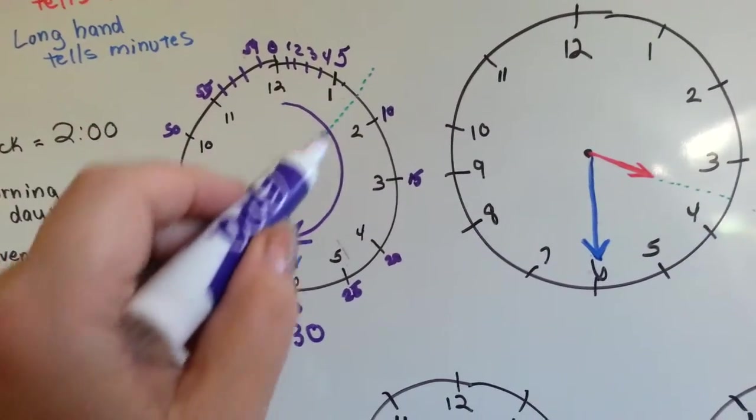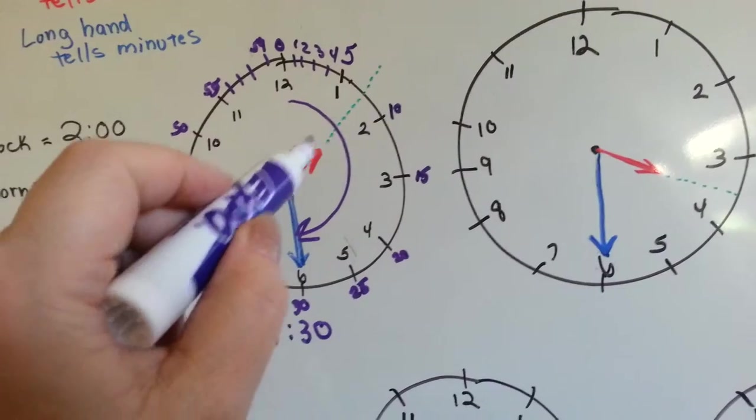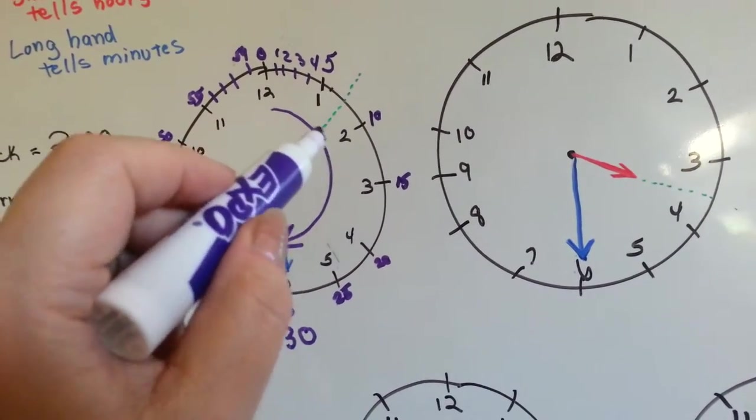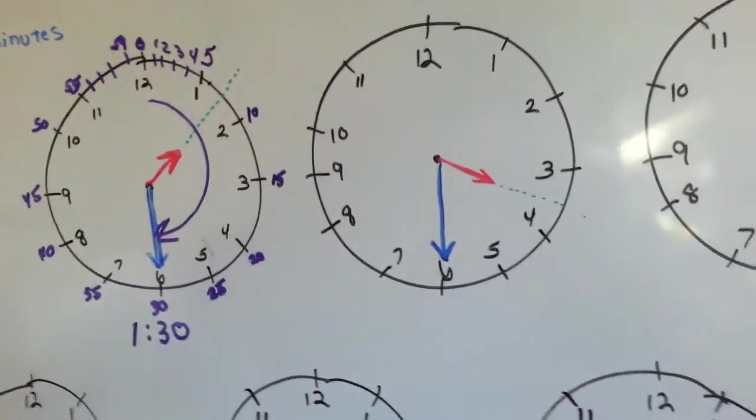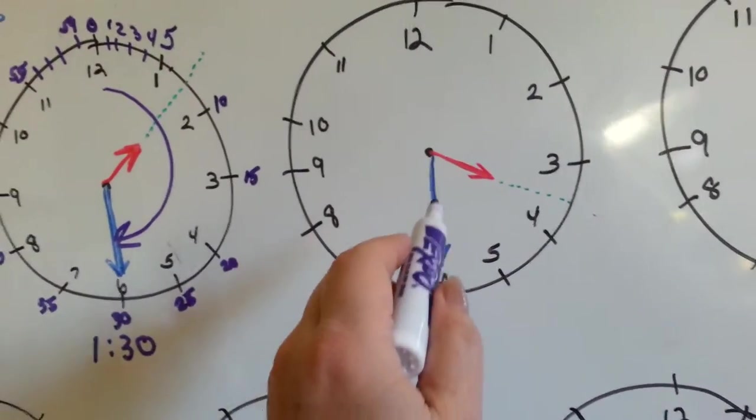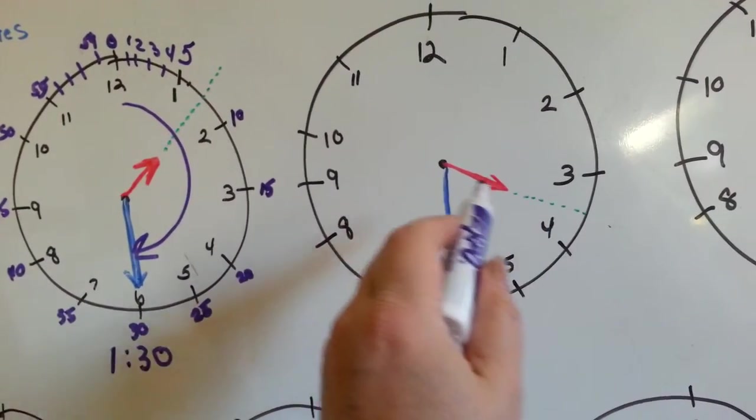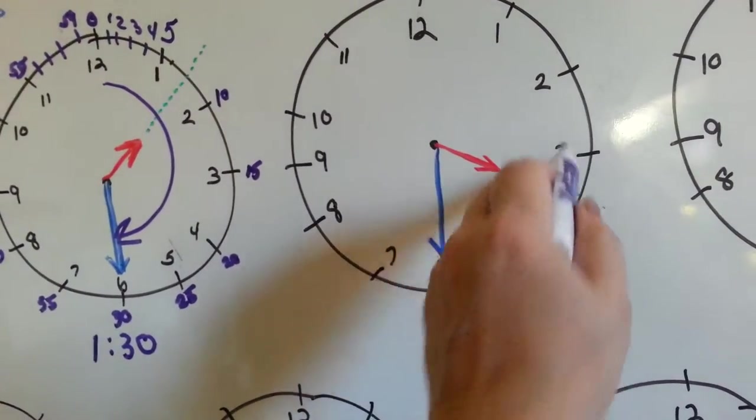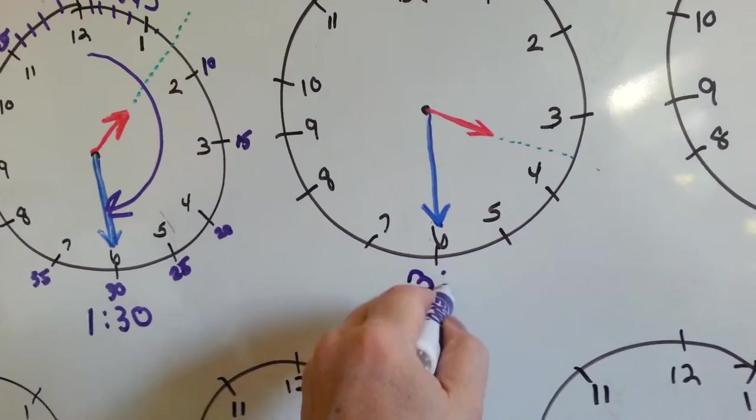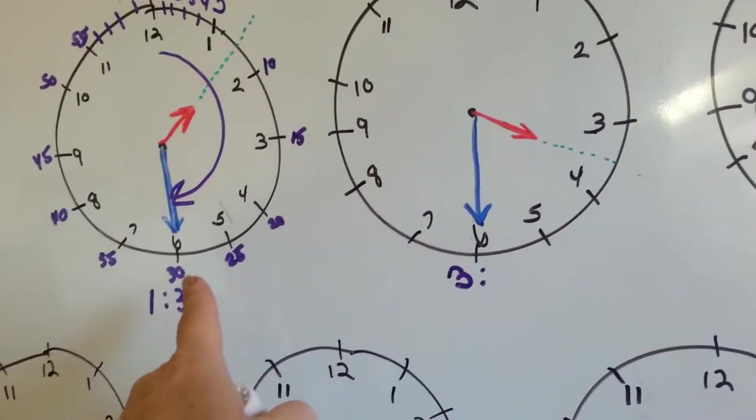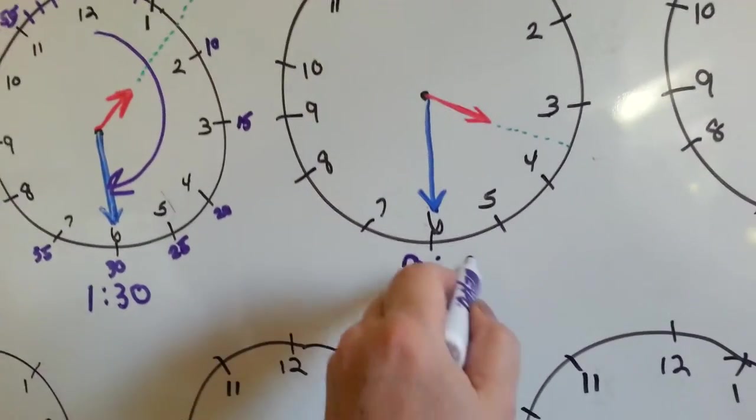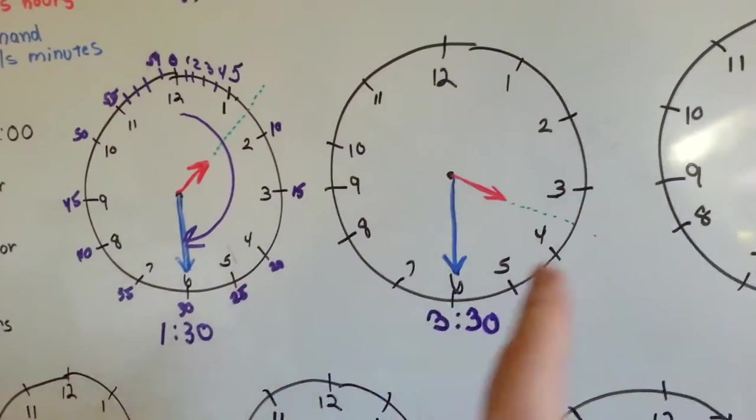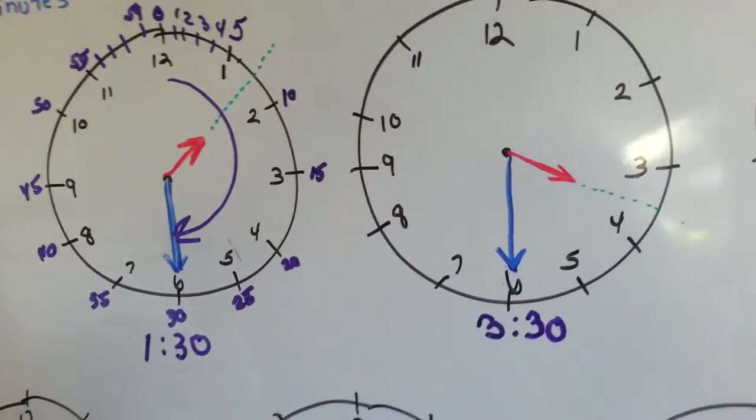So if this is 1:30, it's in between the 1 and the 2, and you go with the smaller number. It wouldn't be 2:30. That would be down here. Look at this time. The hour hand is pointing in between the 3 and the 4. We're going to go with the smaller number, 3, and it's pointing to the 6, which is 5, 10, 15, 20, 25, 30. Just count by 5s going around. Let's try another one.